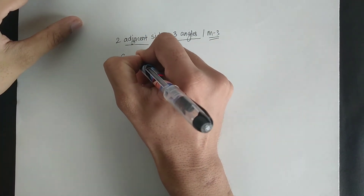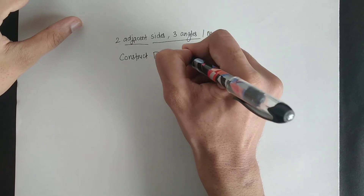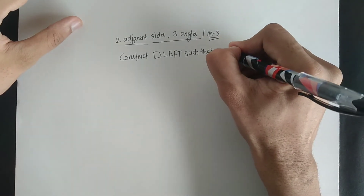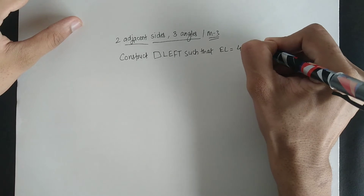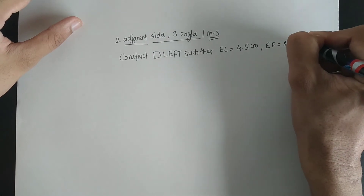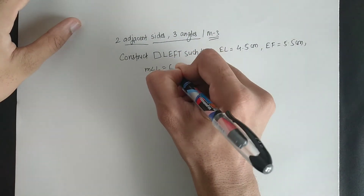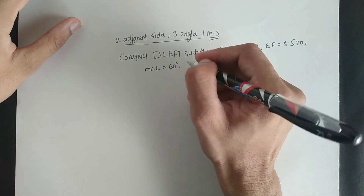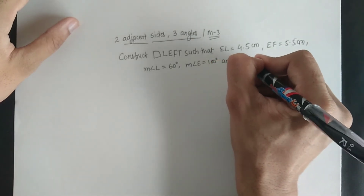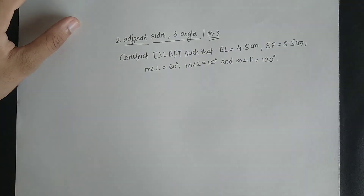Construct quadrilateral LEFT such that EL is equal to 4.5 centimetre, EF is equal to 5.5 centimetre, angle L is equal to 100 degrees, and angle F is equal to 120 degrees. So this is the given data.